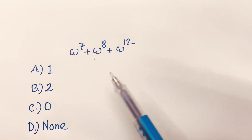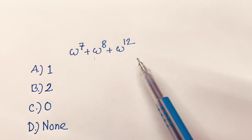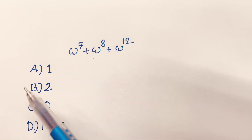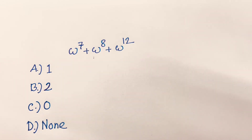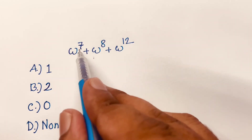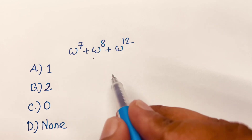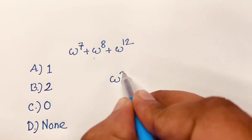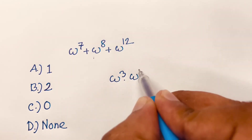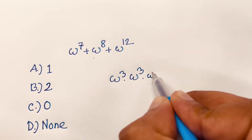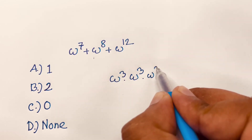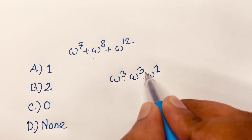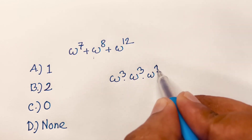To solve omega power 7 plus omega power 8 plus omega power 12, here are 4 options — we'll find the right one. First, omega power 7 can be written as omega power 3 times omega power 3 times omega power 1, since 3 plus 3 plus 1 equals 7.